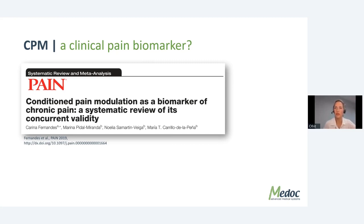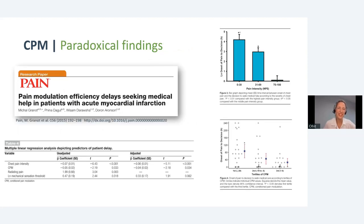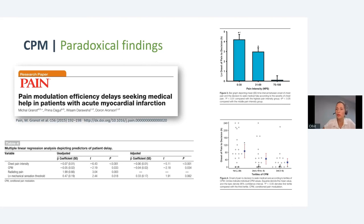We concluded we want to have effective CPM, right? Not in all cases, apparently. Granot (2015) studied patients admitted to Rambam Medical Center's ICU after their first ST-elevation myocardial infarction — 67 patients completing the study. They looked at how long it took patients to seek medical attention. Patients with intense pain went to the hospital much faster than those with mild or moderate pain, who took their time.